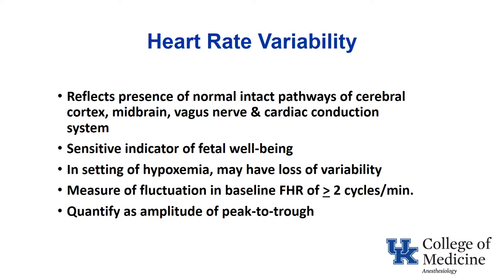Variability is defined as a measure of fluctuation in baseline fetal heart rate of over two cycles per minute. They quantify it by looking at the amplitude from the peak baseline down to the trough of baseline. In reality, it's generally more of a gestalt — while an internal fetal scalp electrode may allow quantitative measurement, on monitors it's more of a visual assessment of how the variability looks.